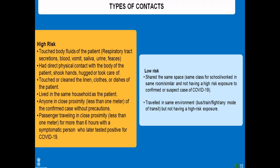Contacts can be of two categories: high risk and low risk. High risk contacts are those who have touched the body fluids of the patient — respiratory tract secretions, blood, vomit, saliva, urine, or feces — or had direct physical contact like shaking hands, hugging, or providing care. Those who touched or cleaned the patient's linen, clothes, or dishes; lived in the same household; or were in close proximity — less than 1 meter — without precautions. A passenger traveling less than 1 meter for more than 6 hours with a symptomatic person who later tested positive is also high risk. All others fall under low risk contacts.